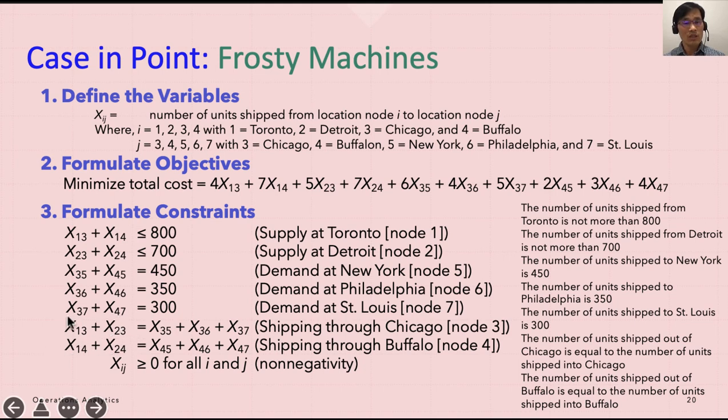And from Chicago, it's going to be shifted to other places such as New York and Philadelphia and St. Louis. They have to be equal. You cannot be imbalanced. In the same way for Buffalo.